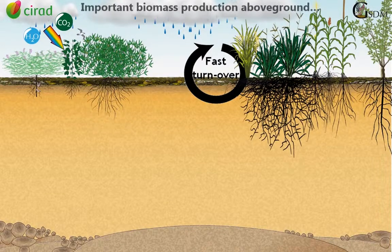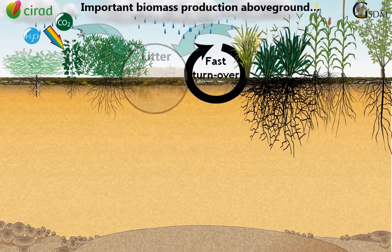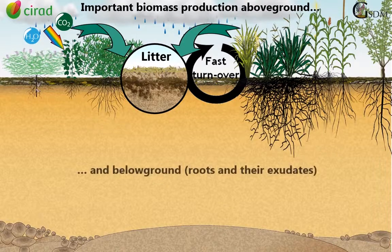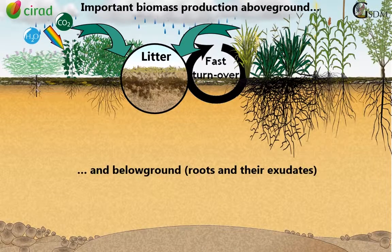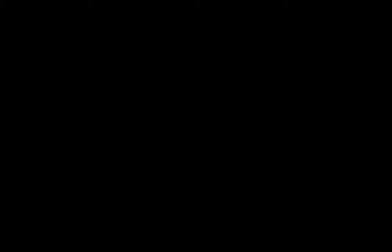The above-ground biomass, produced in abundance by the diversity of plants, regularly flows into the surface litter, while the below-ground biomass directly provides the soil with organic matter, such as living roots and their exudates.